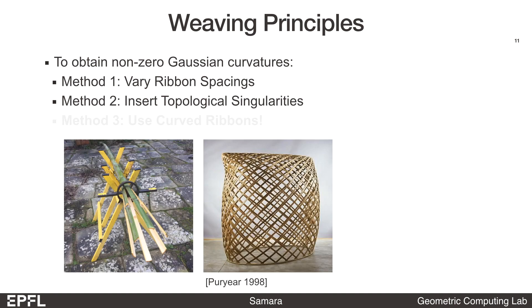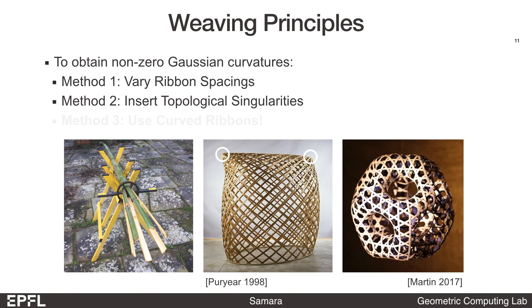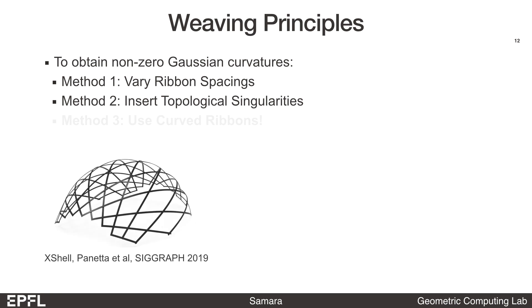The first two methods have been extensively explored in existing basket weaving techniques. Traditionally, topological singularities only appear in a few locations, such as the corners of the basket. Artist Alison Martin has created many complex surfaces by empirically studying the effects of singularities.